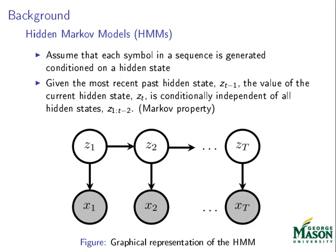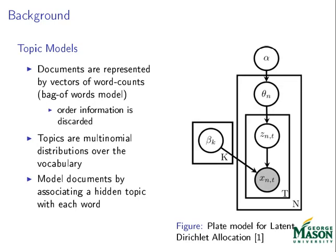Topic models are another important concept relating to our model's ability to represent sequences. Topic models, like hidden Markov models, assume a hidden state generates an observed symbol. However, in this case, order information in a document, or in our case a sequence, is discarded.